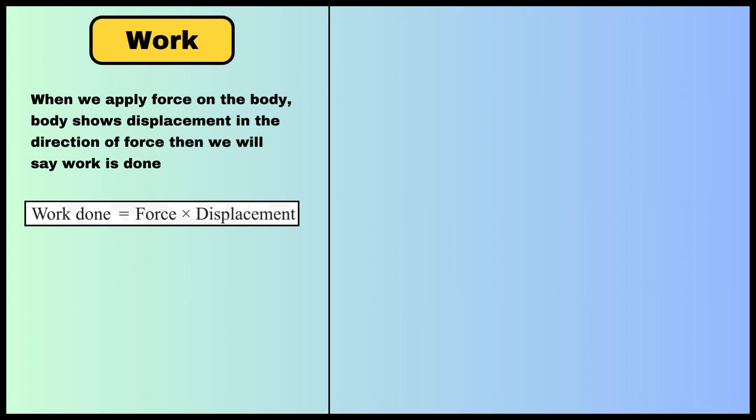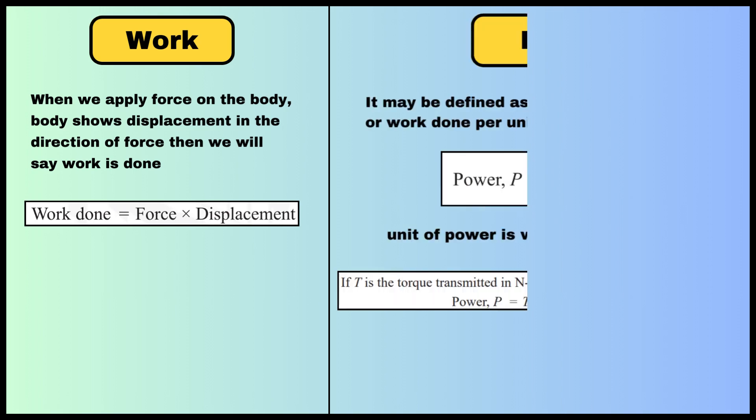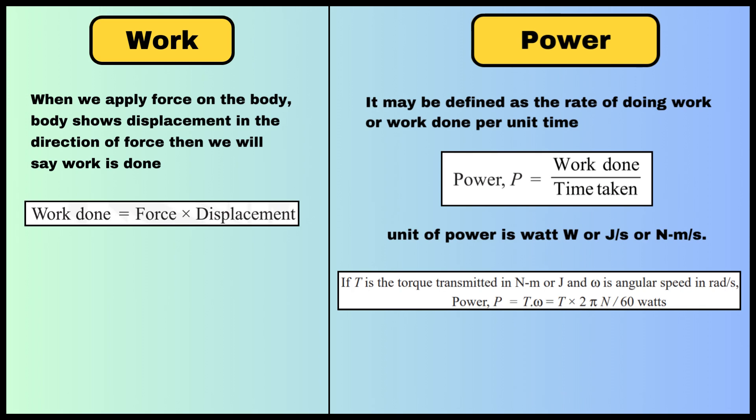The next term is work. When we apply force on a body and the body shows displacement in the direction of that force, we call it work done. Mathematically, Work = Force × Displacement.